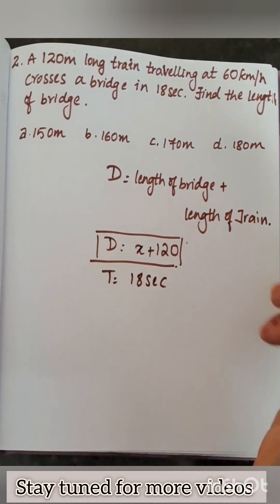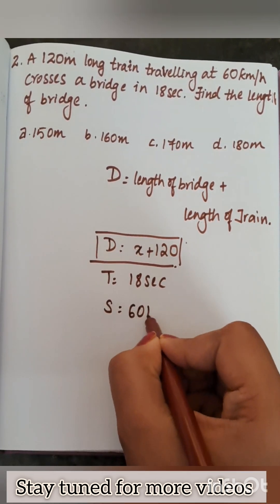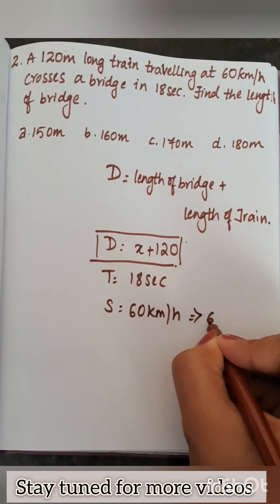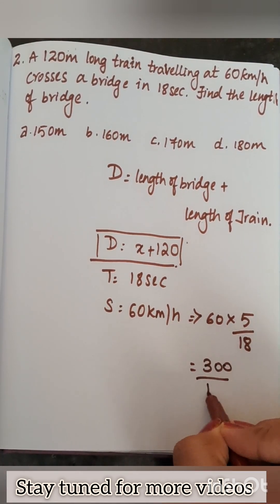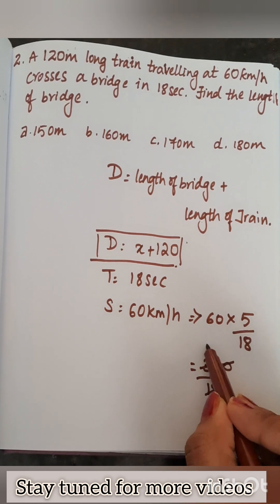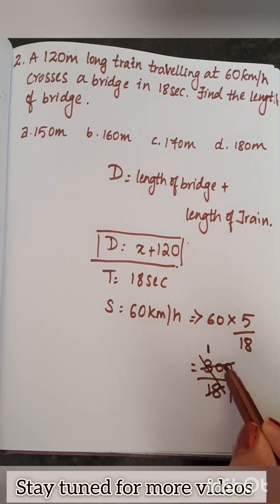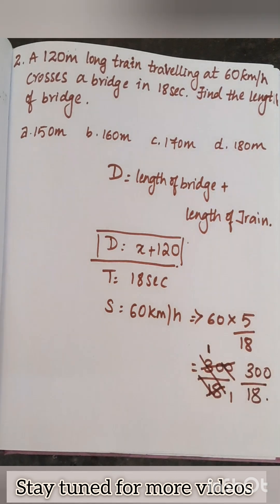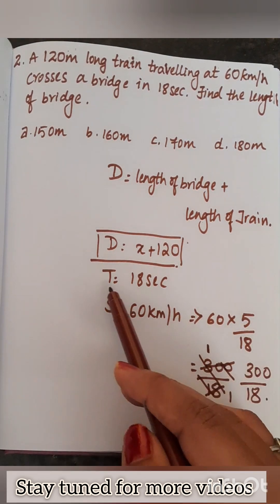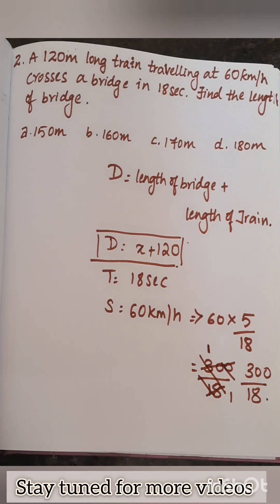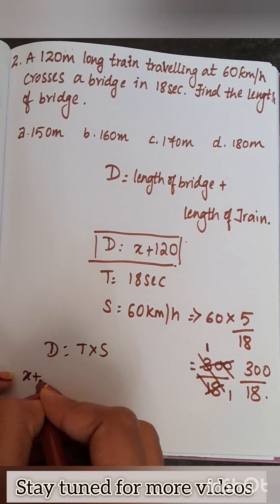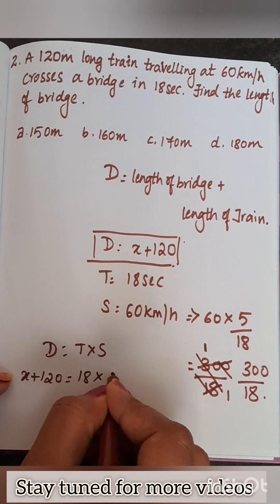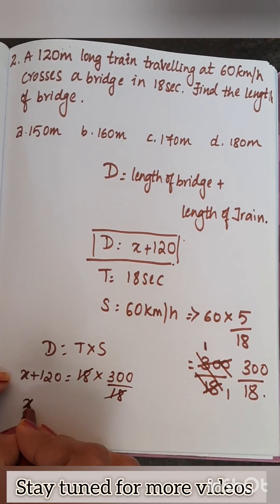Time is 18 seconds and speed is 60 kilometers per hour. Converting to meters per second: 60 into 5 by 18 gives 300 by 18. I'll leave it unsimplified as 300 by 18. Substituting into the formula, distance equals speed into time, so x plus 120 equals 18 into 300 by 18. The 18s cancel, giving x plus 120 equals 300.